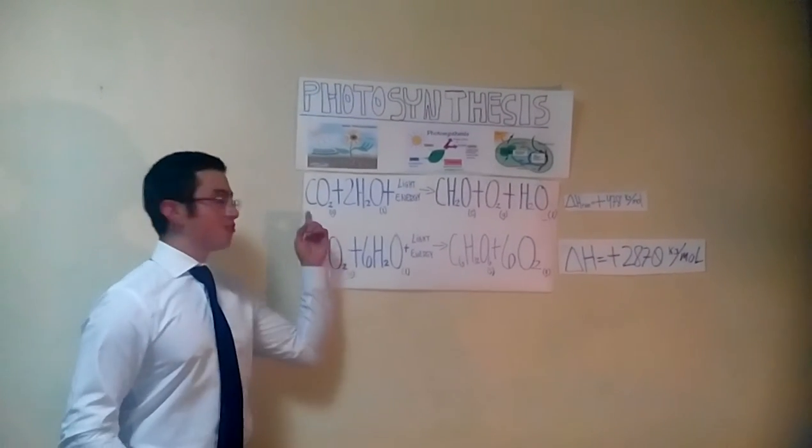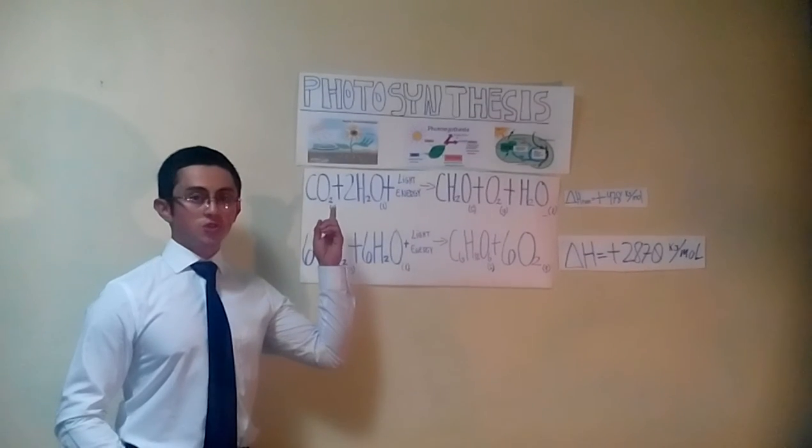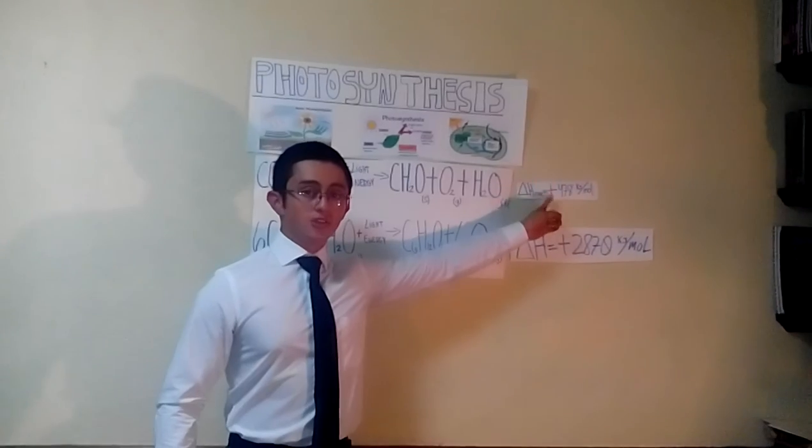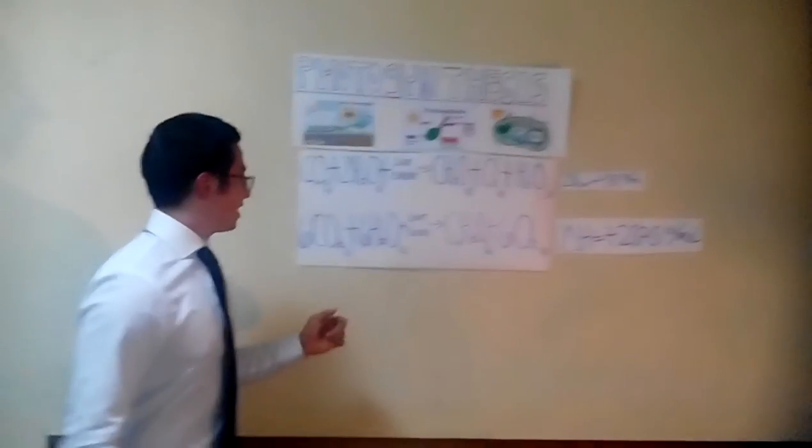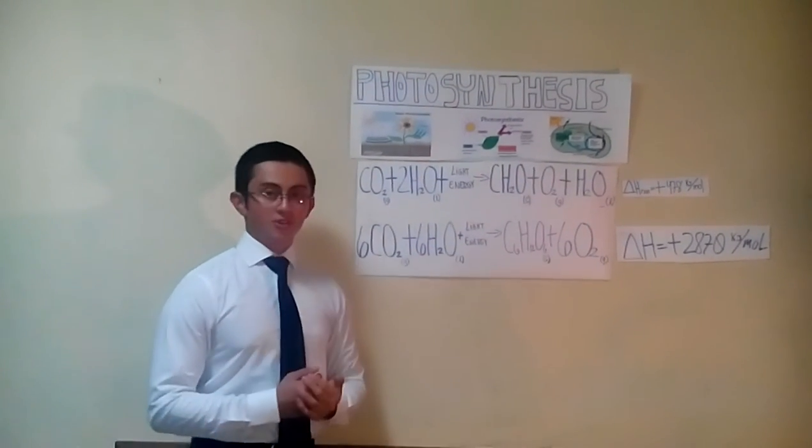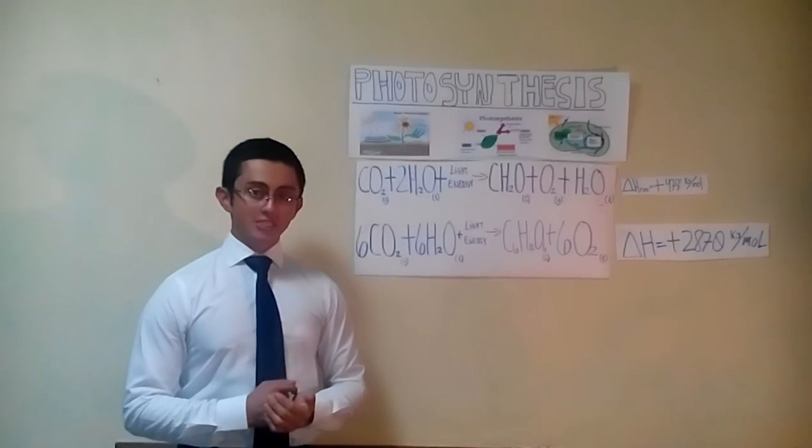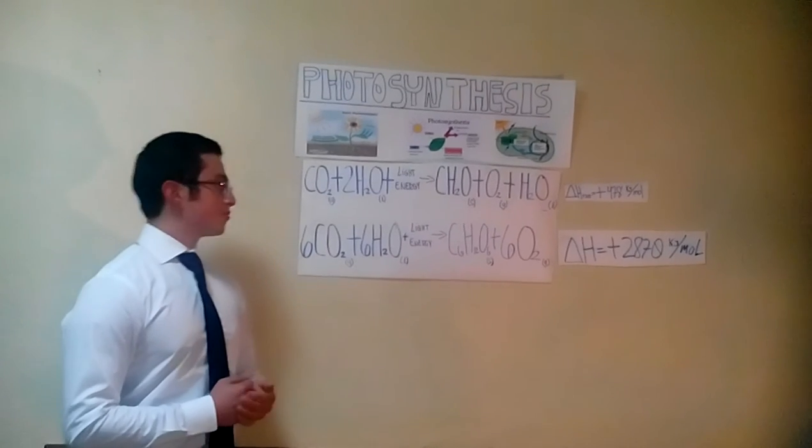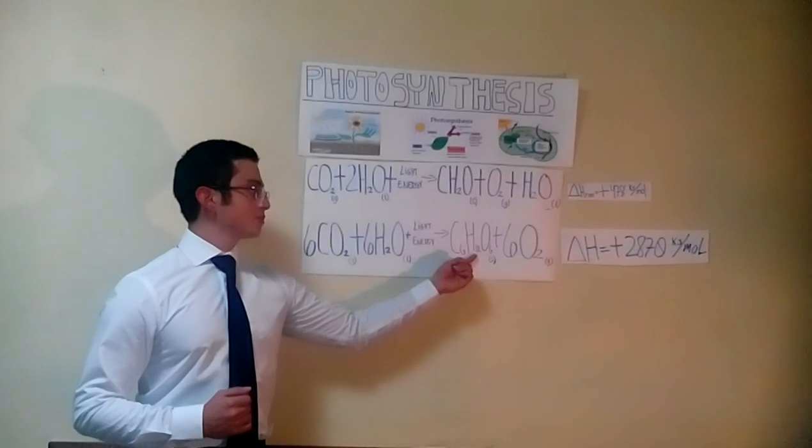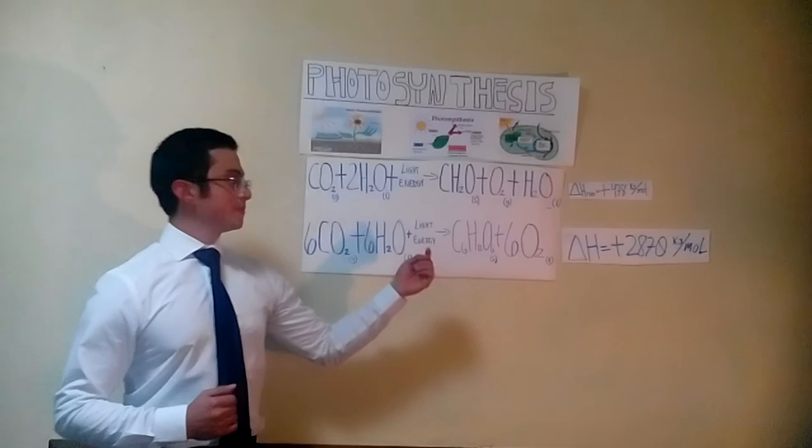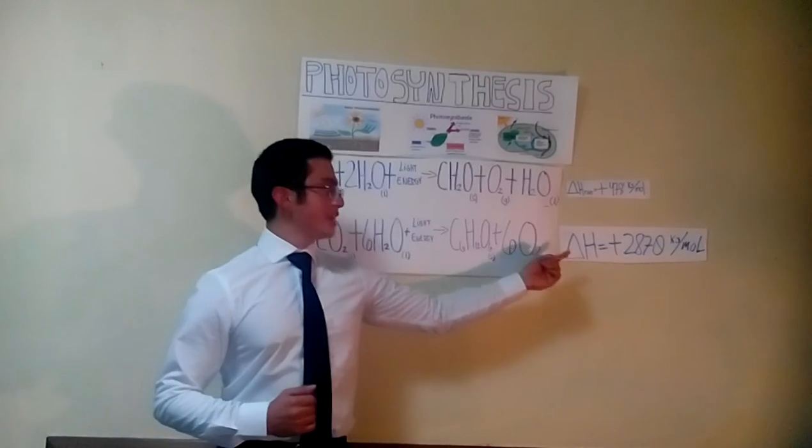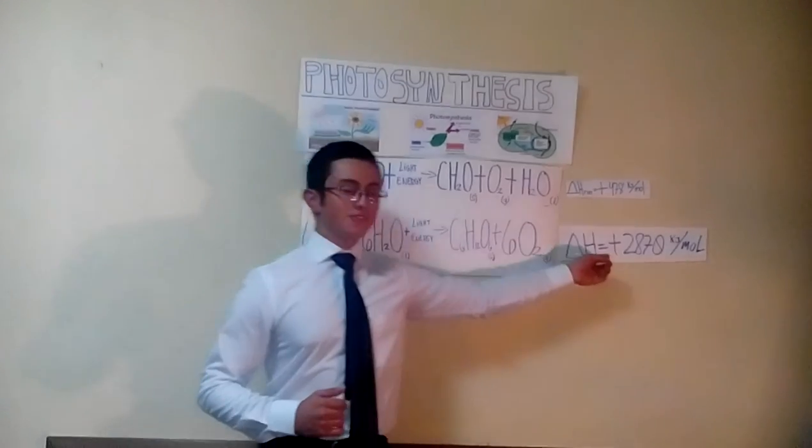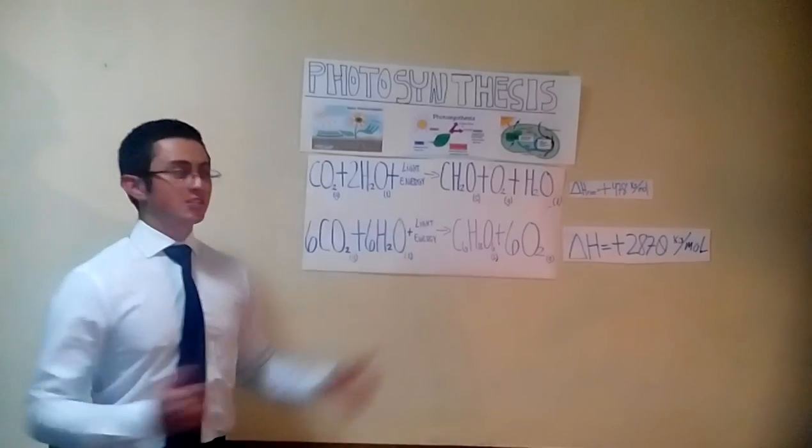For the reduction of one mole of CO2, the enthalpy of reaction equals positive 478 kJ per mole. And glucose is also a product of photosynthesis. This one right here is the empirical equation. So for the production of one mole of glucose, the enthalpy of reaction is super endothermic - it is positive 2870 kJ per mole.